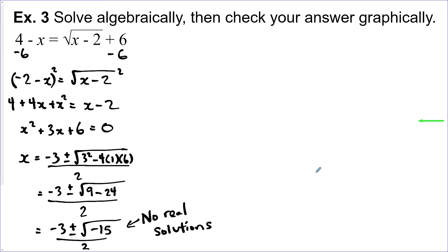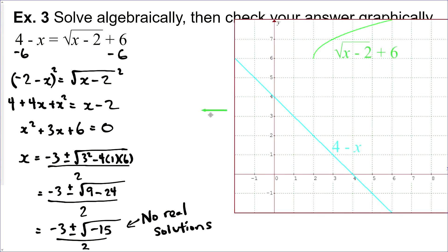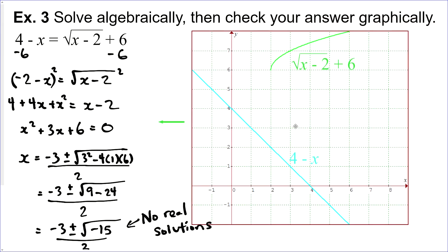Now if we look at the graph of this equation, graphing each side independently, we see that there is no place where they are equal using the real numbers.